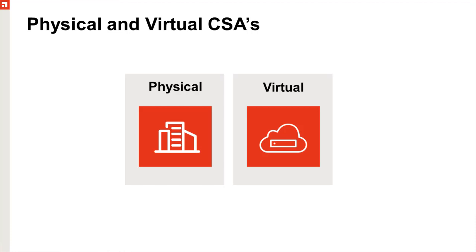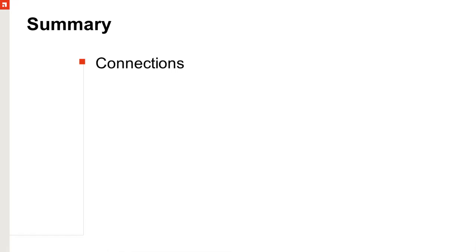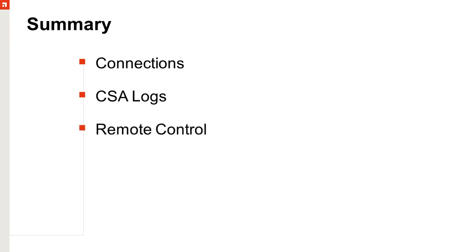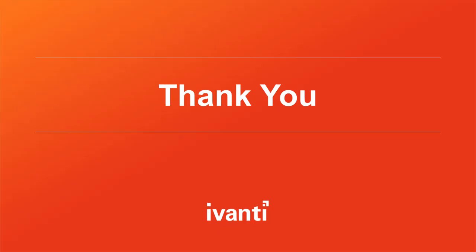If you have any questions about these items, please reach out to our support team — they'll be happy to help. To recap: we discussed allowing and understanding connections, what the best maximum connections setting is for your environment, watching out for logs filling up your disk space, remote control modes — gateway mode versus direct mode depending on where the end user is located — and the physical versus virtual CSA. Thanks for tuning in and have a good day.